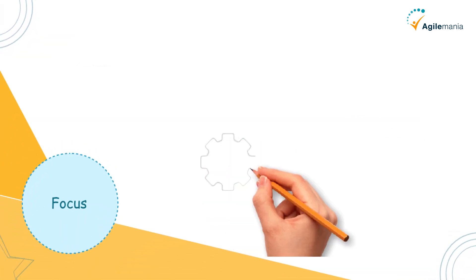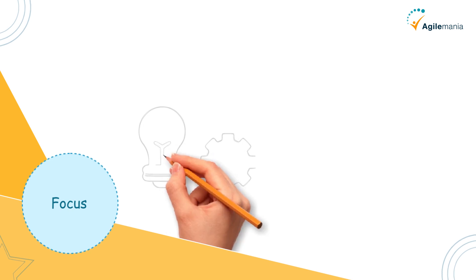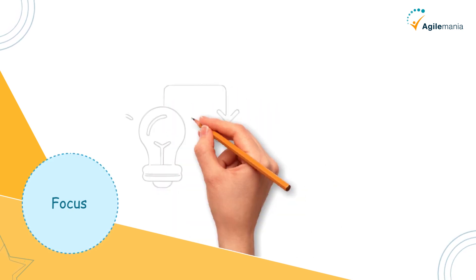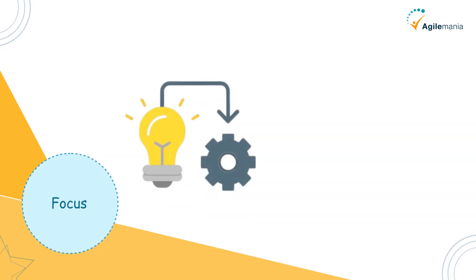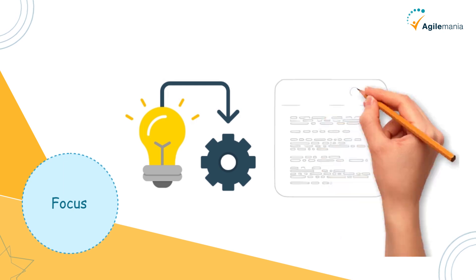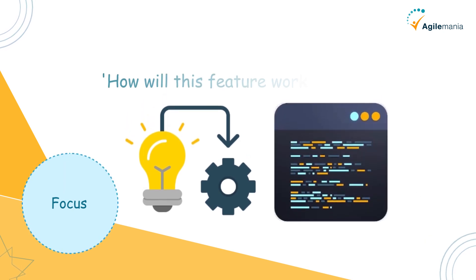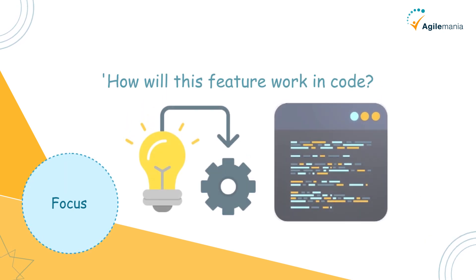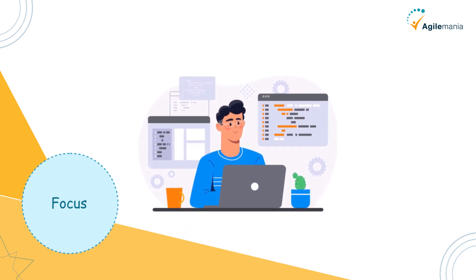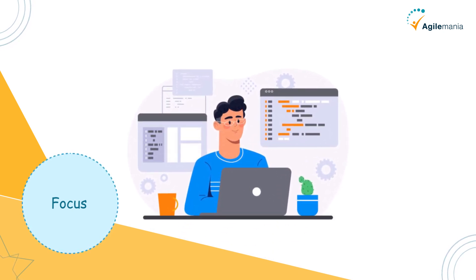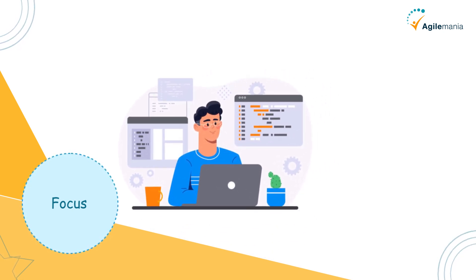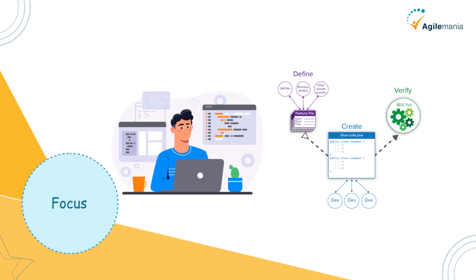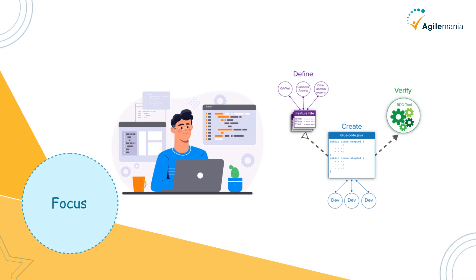The next aspect is focus. TDD focuses on the implementation — it's all about whether the code does what it's supposed to do at a technical level. Developers think in terms of how will this feature work in code? BDD, on the other hand, focuses on behavior: understanding what the user needs and ensuring the application meets those needs. Stakeholders and non-technical team members can easily understand BDD because it uses natural language.